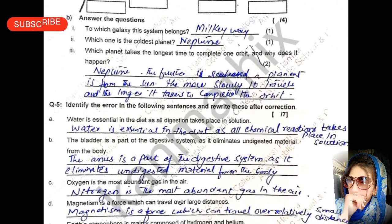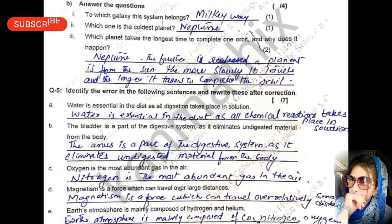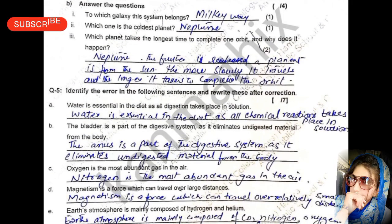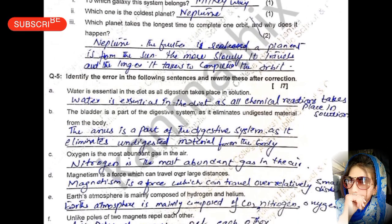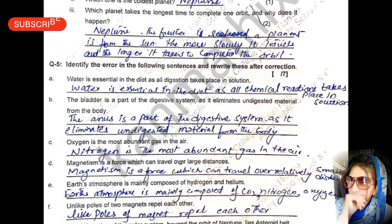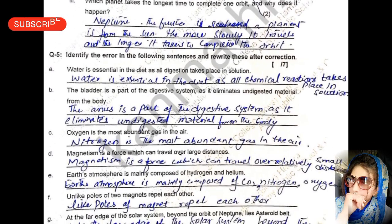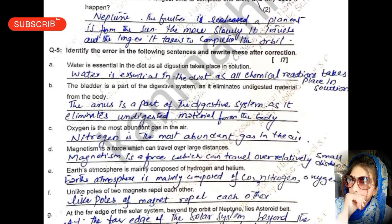Which planet takes the longest time to complete one orbit, and why does it happen? Neptune is the planet which takes the longest time. The farther a planet is from the sun, the more slowly it travels and the longer it takes to complete its orbit.